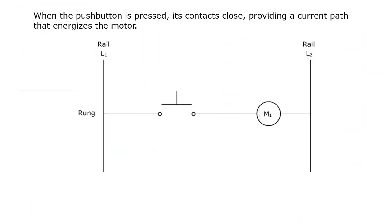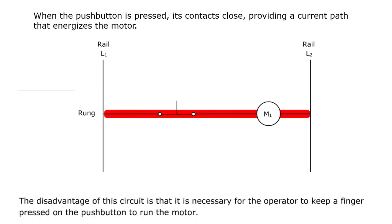When the pushbutton is pressed, its contacts close, providing a current path that energizes the motor. The disadvantage of this circuit is that it is necessary for the operator to keep a finger pressed on the pushbutton to run the motor.